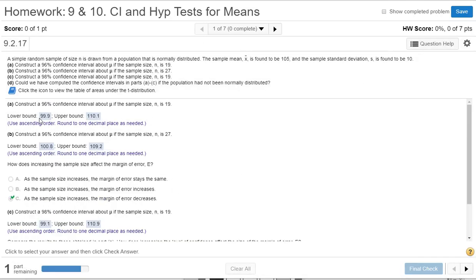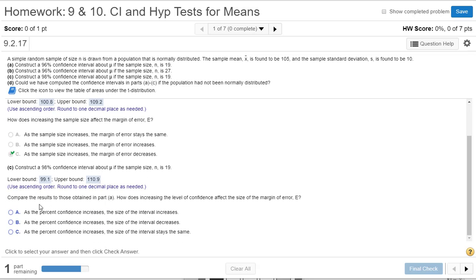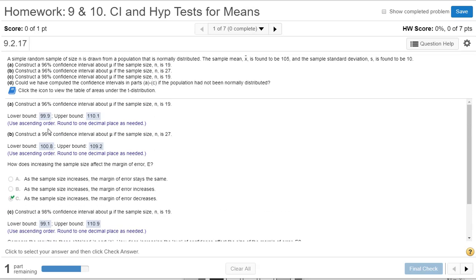Here's 99.1. So again, we're comparing part A, because the only thing that changed here. We're comparing results to part A. How does increasing the level of confidence affect the margin of error? So we're looking at the width of the interval here. We go from 99.9 to 110.1. Here's 99.1, 110.9.